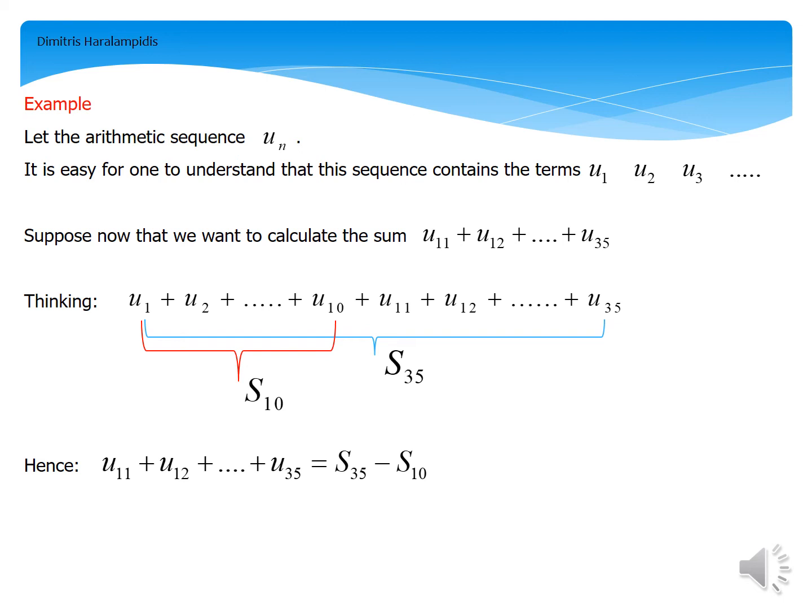In other words, S_35 equals u_1 plus u_2 plus... plus u_10 plus u_11 plus u_12 plus... and so on plus u_35.